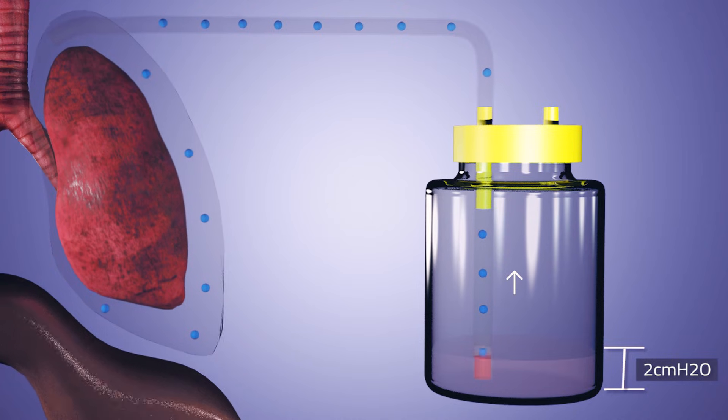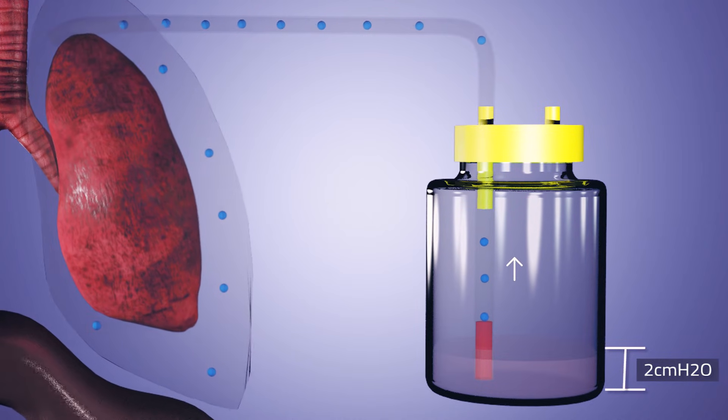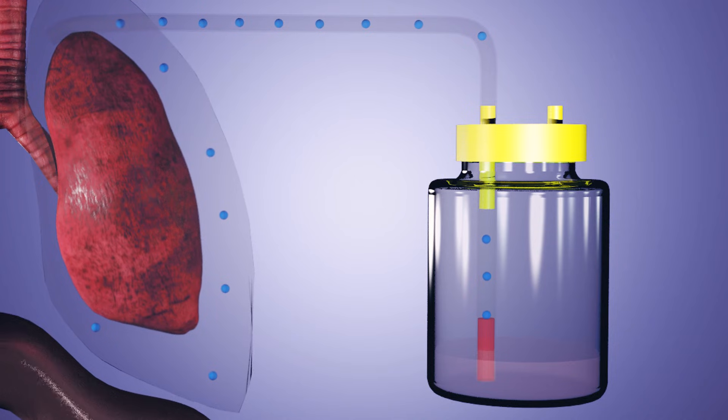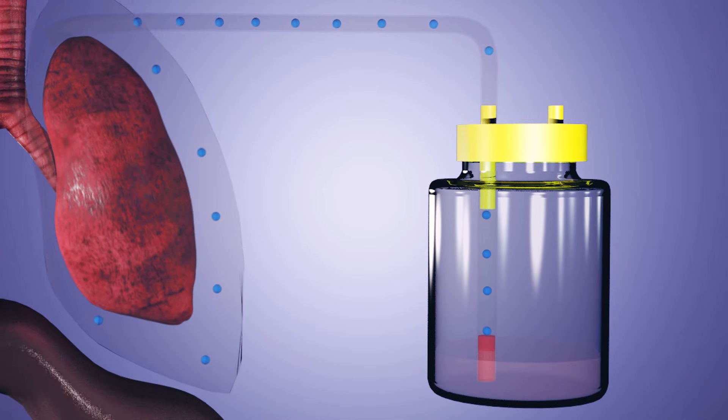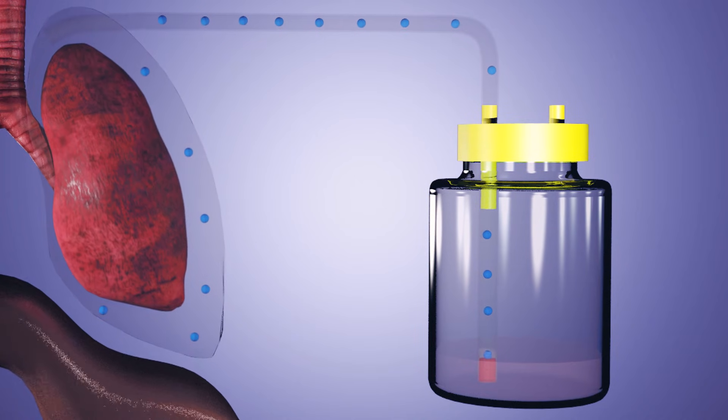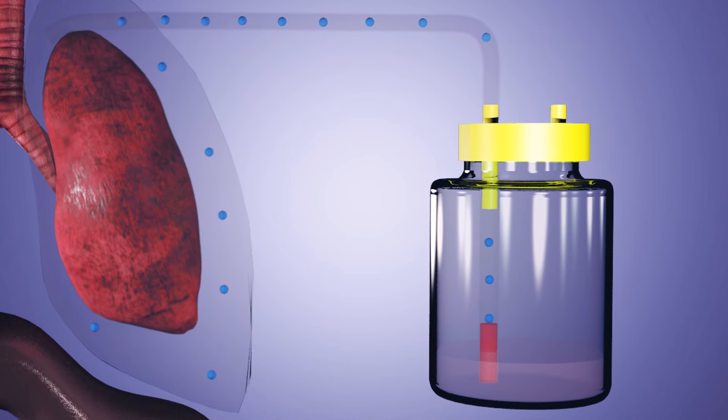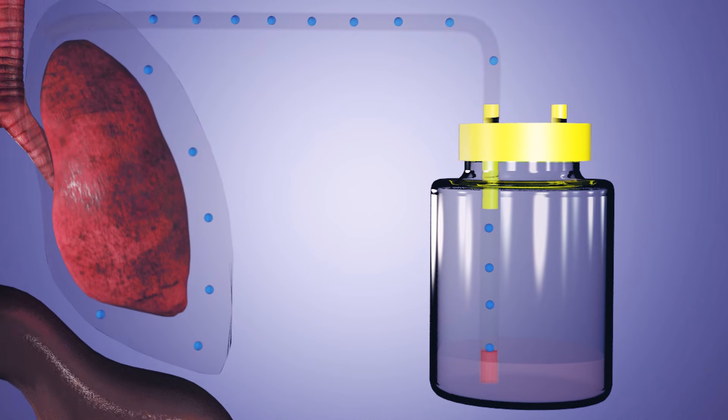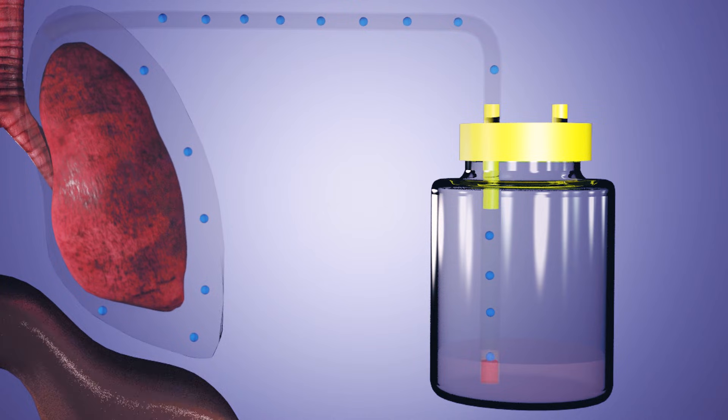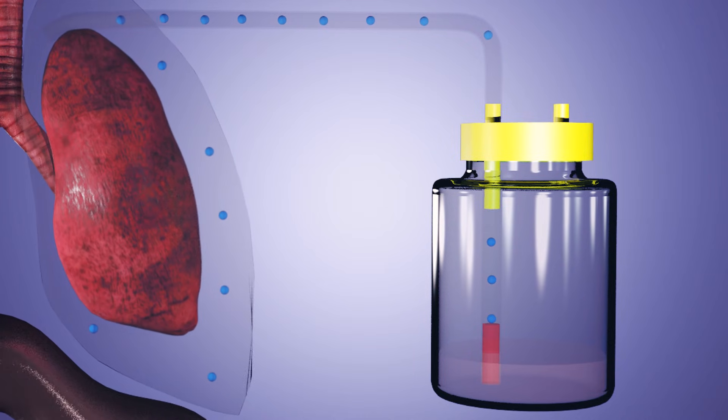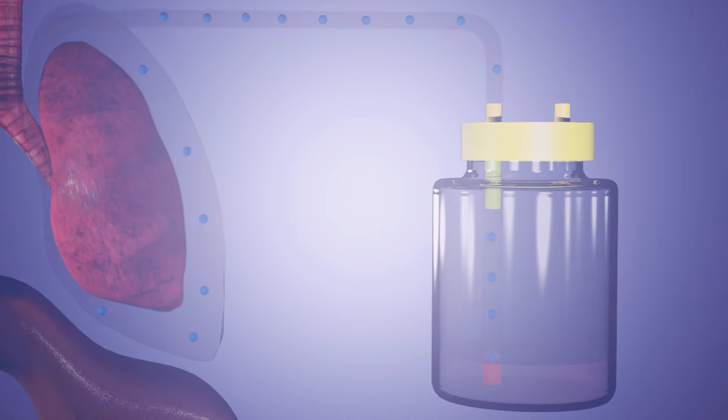During inhalation, the water seal works as a backflow valve. However, due to its features, part of the air in the drain returns to the pleural space. At the end of the drainage, the pressure generated to expel the remaining air from the pleura is not enough to overcome the opening pressure of the water seal. The use of the water seal system makes the drainage longer and does not allow the full expansion of the lung.